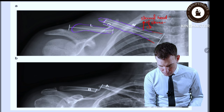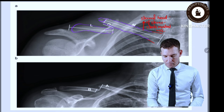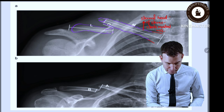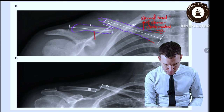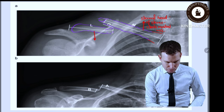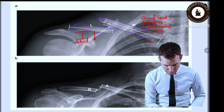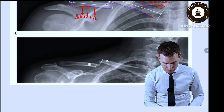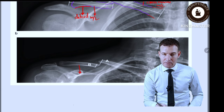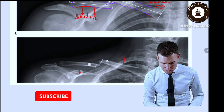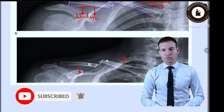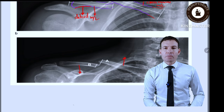The sternal head of the sternocleidomastoid pulls the medial part upward, while the lateral side is pulled downward due to the anterior fibers of the deltoid muscle, which attaches over there. You can see in another example that the lateral side moves down and the medial side moves up due to the forces of these mentioned muscles. That is the end — thank you.